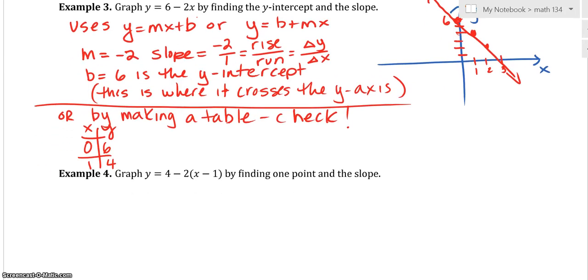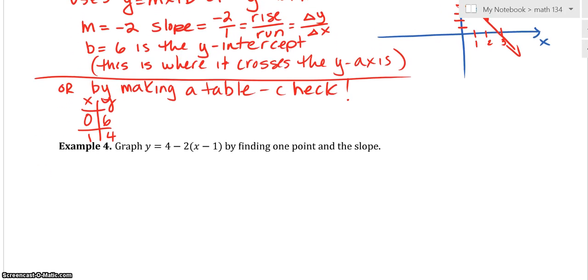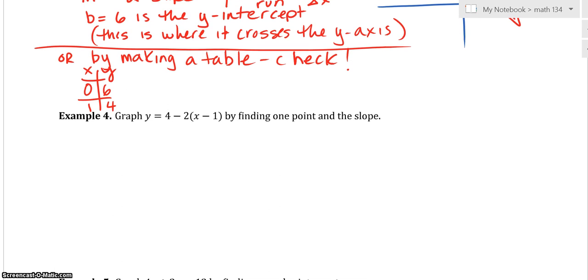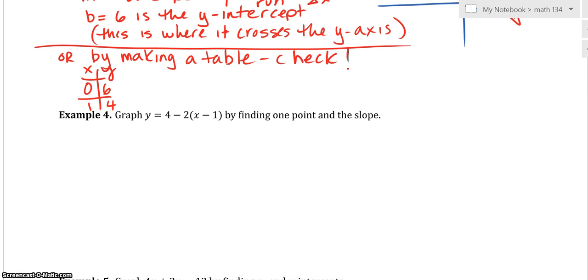If you remember, this looks like the other formula that we had. It's our point-slope formula. So this one uses y = y1. But if you remember what the book likes to call it, it's y0. Either one.